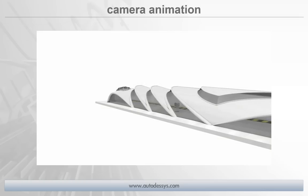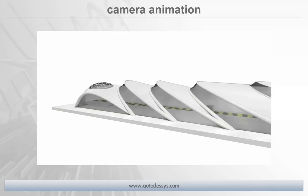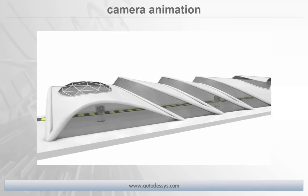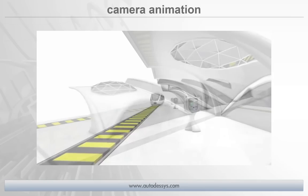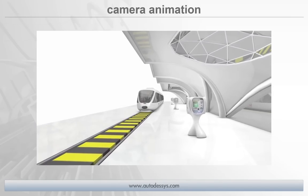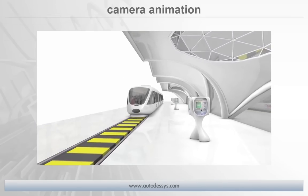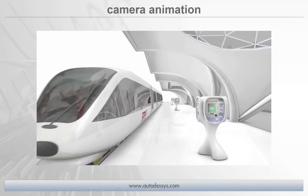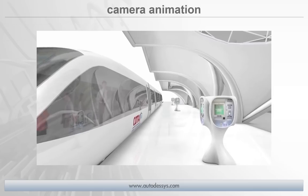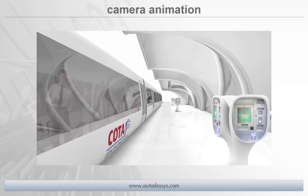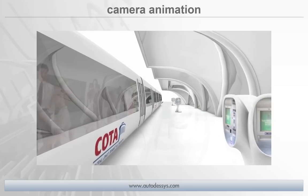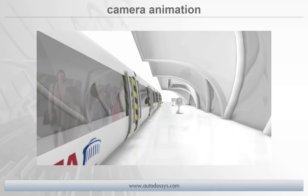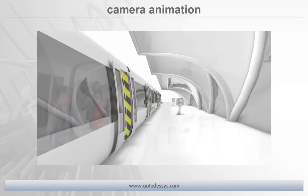We'll also take a look at animating cameras, so you can easily create flyby and walkthrough animations of your design. One technique is to save a series of views and let Form Z automatically create an animation through those views. Another technique is to create the path yourself and tell Form Z to have the camera follow that path. We'll take a look at both methods in just a few moments.